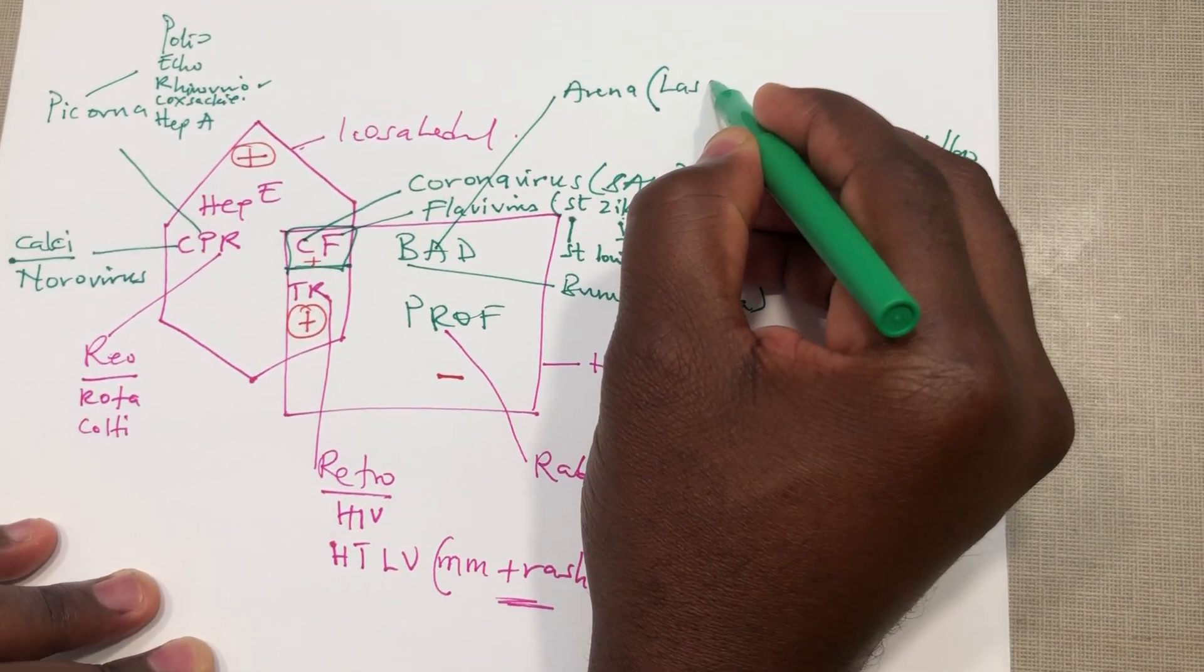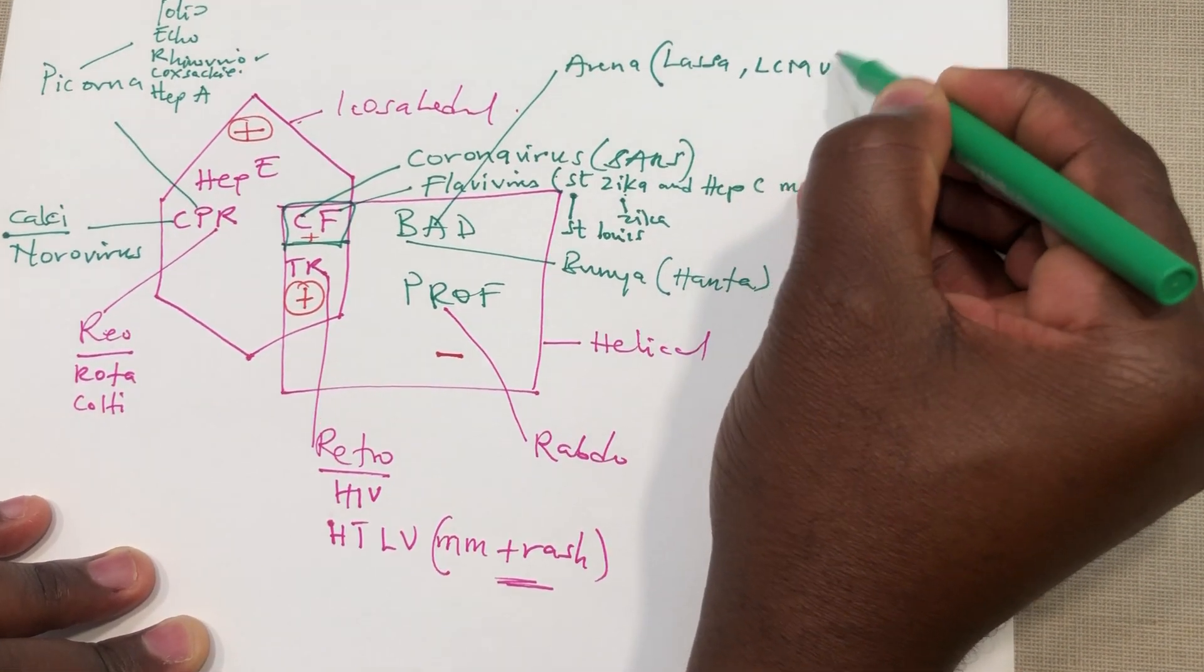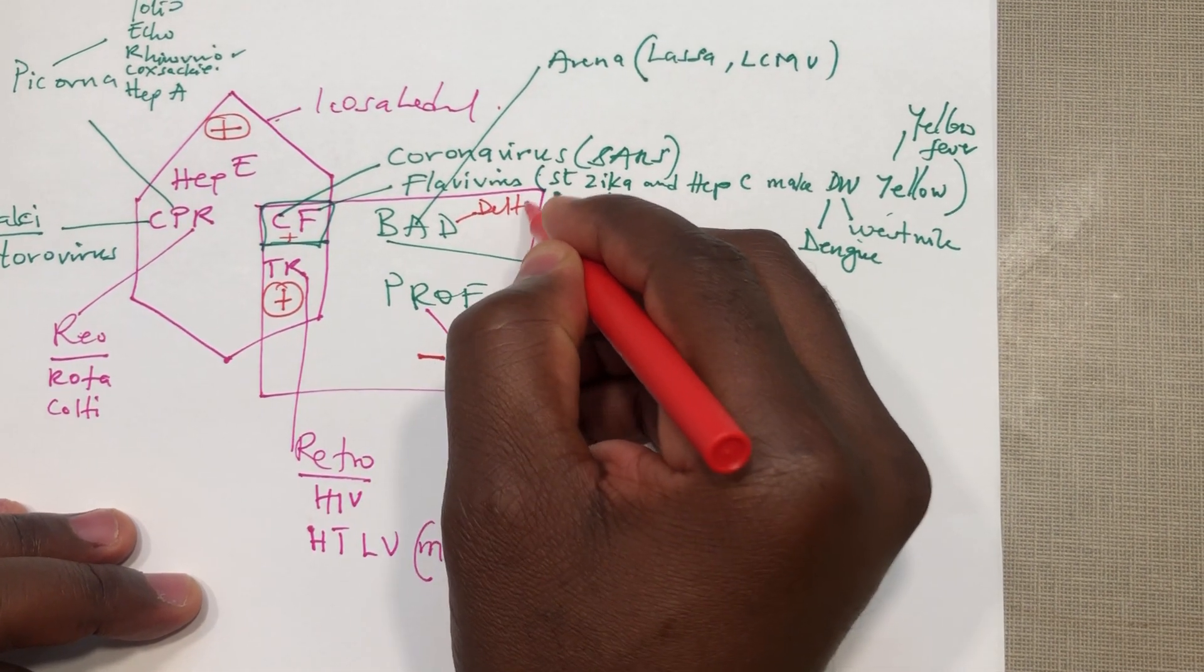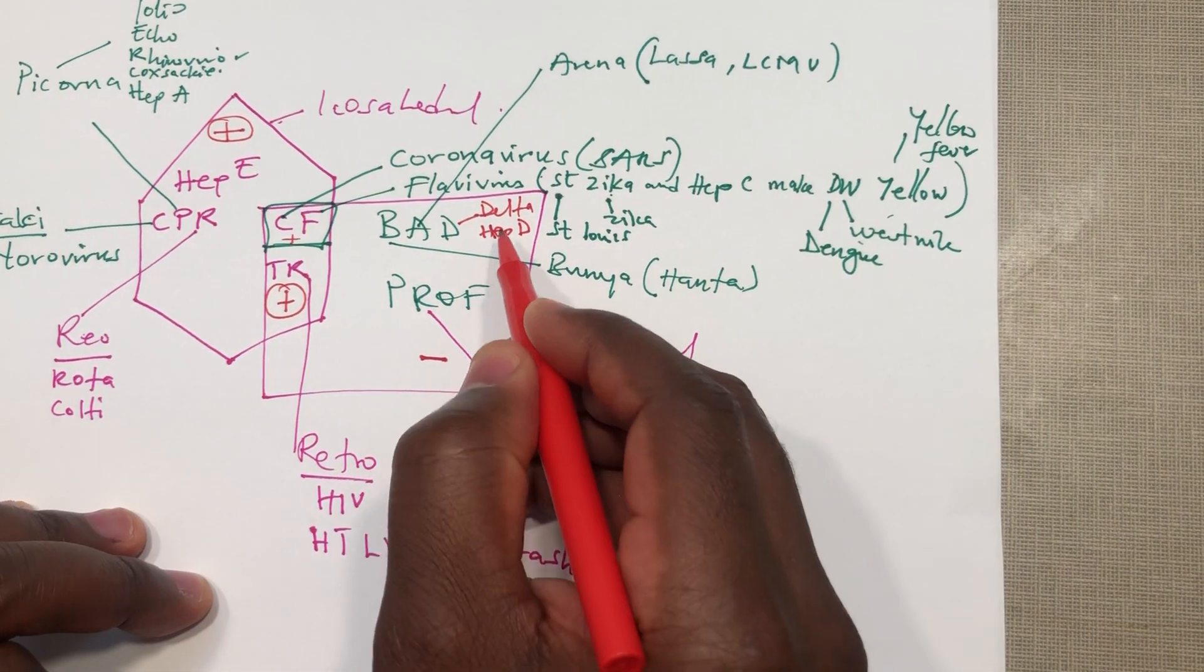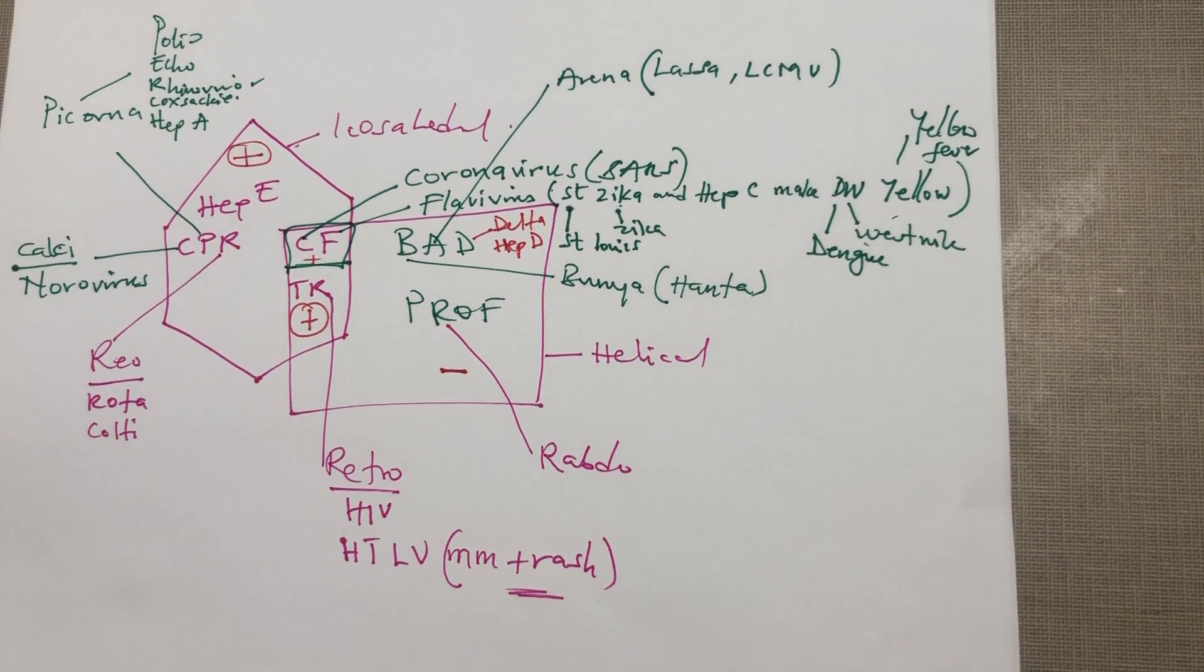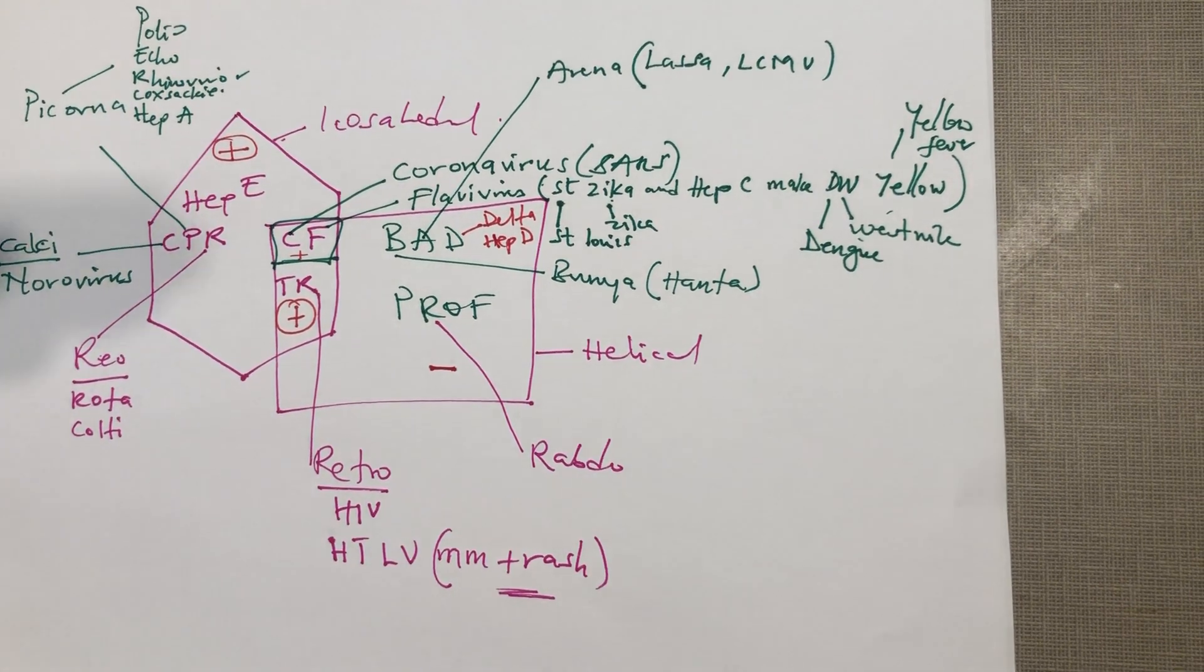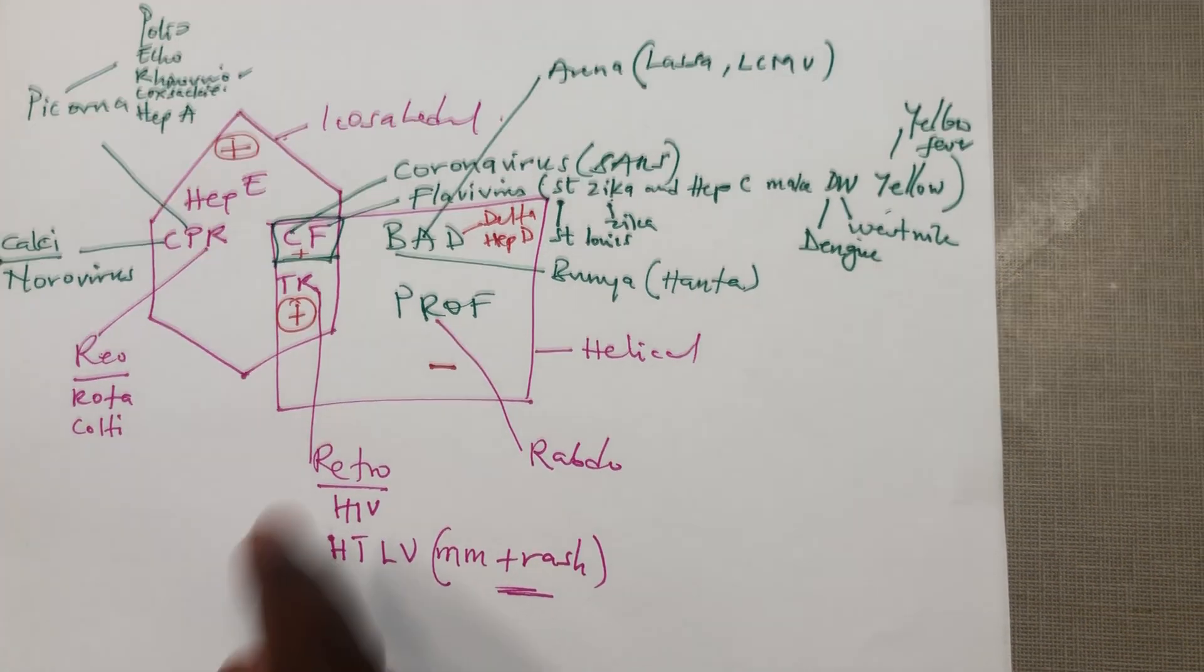The next one is the delta virus. This is delta and of course it's hep D. What you want to know about hep D is that it cannot exist on its own, so it only infects somebody who has been infected with hep B. If we treat somebody of hep B or somebody has fully recovered from hep B, then automatically the person is immune to hep D as well.